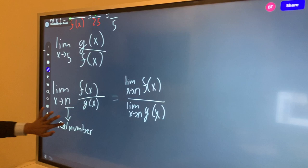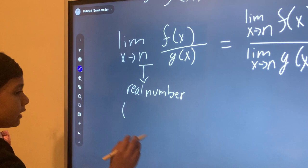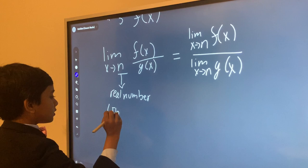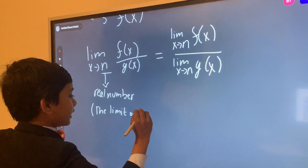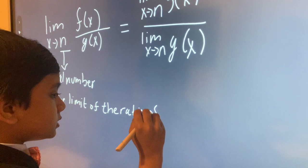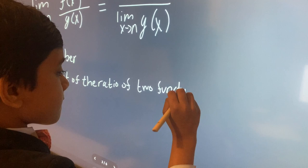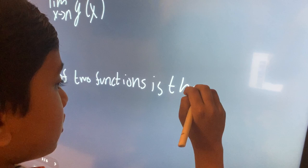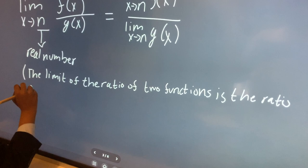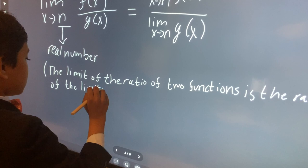So we can write it as saying the limit of the ratio of two functions is the ratio of the limit of those functions.